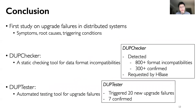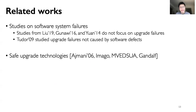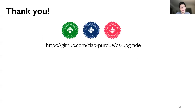To conclude, in this work we performed the very first study on upgrade failures in distributed systems. Based on our study, we built a static checking tool called DUP checker and an upgrade testing tool called DUP tester to help with the early detection of upgrade failures. Due to time limits, I'll skip related works. Thank you.